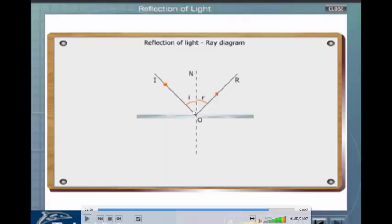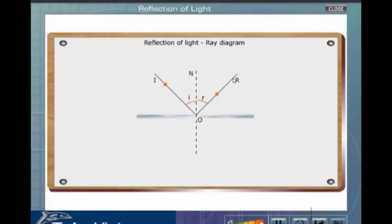What it is saying is that this here is the incident ray, big I. This here is the angle of incidence. This is the reflected ray and this is the angle of reflection.